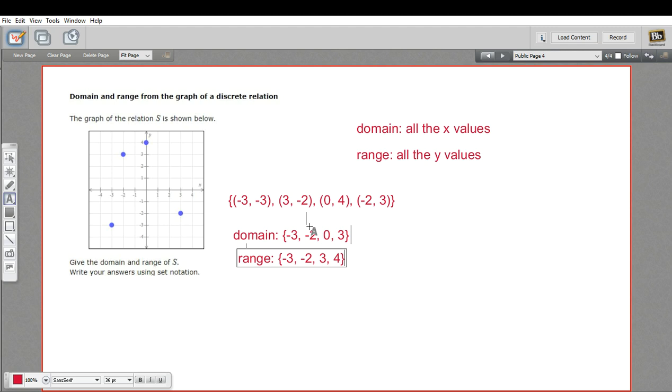So negative three was here, then negative two and three and four. So domain all the x, range all the y, and that's how you write the domain and the range of a relation.